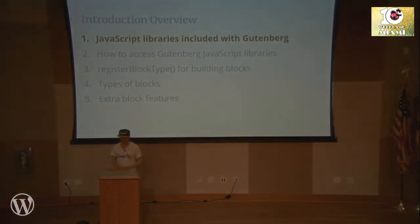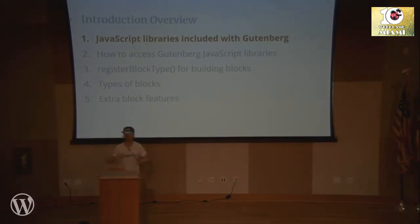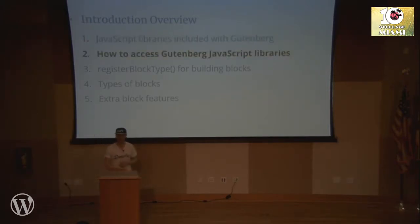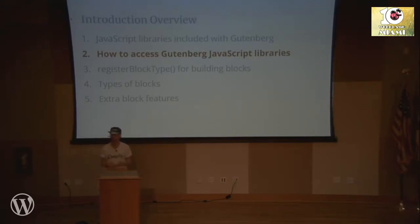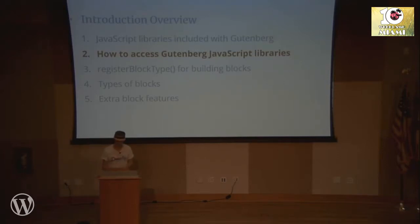The first thing I want to talk about are JavaScript libraries that are included with Gutenberg. Greg talked about them — we have things like React as well as a ton of other things at different levels. Some of them are NPM packages, some are in global scope, and some we have to access differently in the admin editor than on the front end because of how things are enqueued and registered.